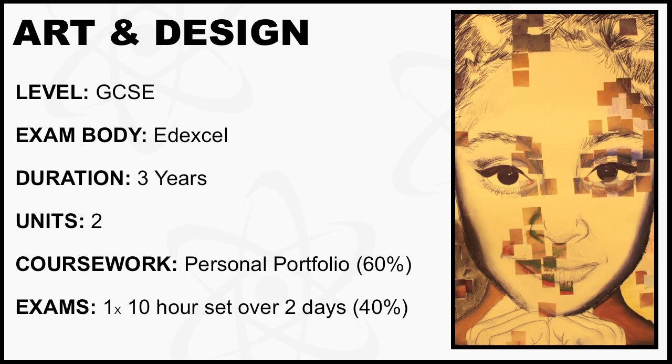GCSE Art and Design. Exam body: Excel. Duration: 3 years. Units: 2.